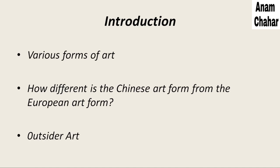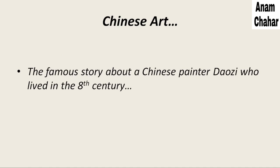The main theme of the chapter is about arts and various forms of art. The chapter is about how different the Chinese art form is from the European art form. The second important topic is outsider art. In this chapter, the writer contrasts the two forms of art — Chinese and European — by using two different stories.